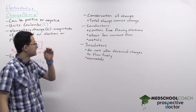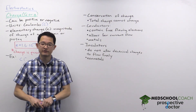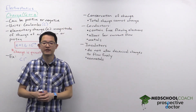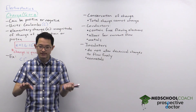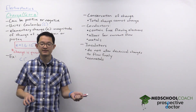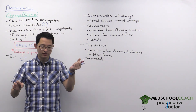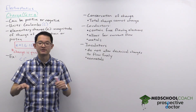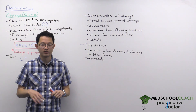The next thing to talk about is conservation of charge. Conservation of charge is fairly straightforward and essentially says total charge cannot change. So for instance, when you take a glass rod and you rub it with silk, the glass rod takes on a positive charge, and that's because the electrons were transferred to the silk. So even though the glass rod lost charge, the silk gained that charge, and there was a net no change in the total charge.